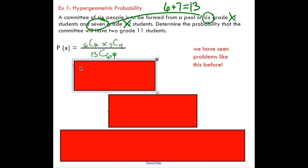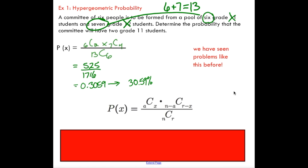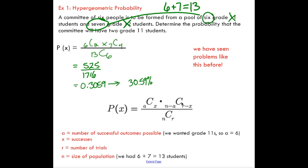So with probability it's a good idea to reduce your fraction to a decimal or percentage. We can conclude that there's a 30.59 percent chance that this committee will have two grade 11 students. So just like with the binomial distribution there is a formula lots of variables. I personally don't like this formula but if you are going to be one of those formula users make sure you understand what these variables represent.